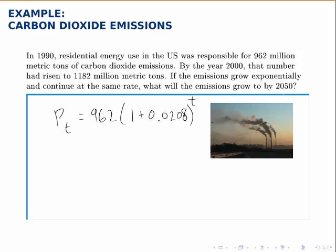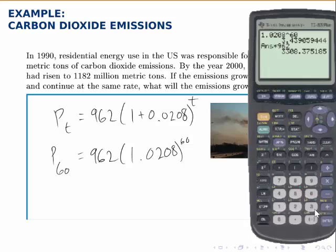We want to predict what will happen in 2050, which is 60 years after our year 0. So let t equal 60 and we can predict what the emissions will be in that year. According to this model, we predict that the emissions in 2050 will hit about 3,300 million metric tons.